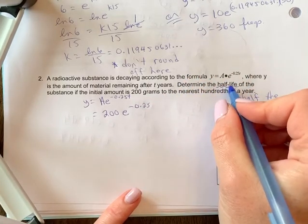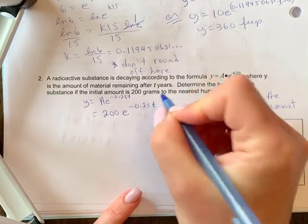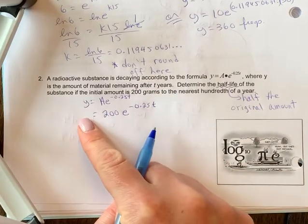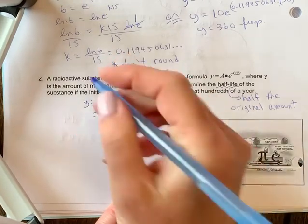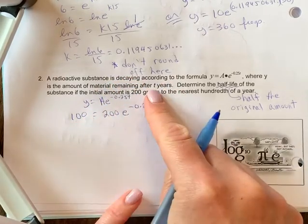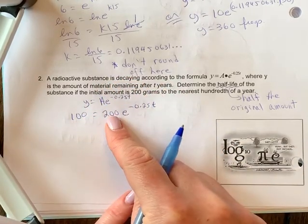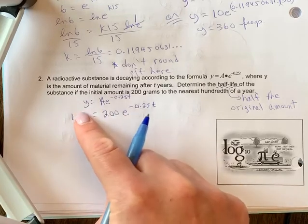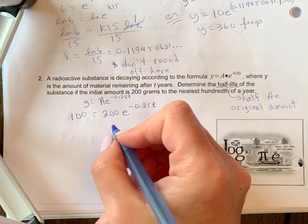We want time because we want to know how long it takes for it to be cut in half. So if this is my original amount, the time it takes for it to be cut in half, my final amount must be 100 grams. So we know that. Even without a starting amount I could pick any starting amount and just put half of it here.